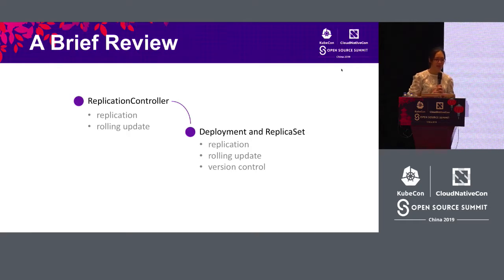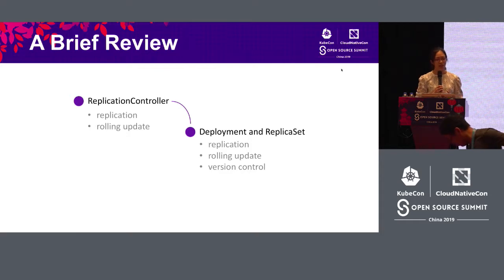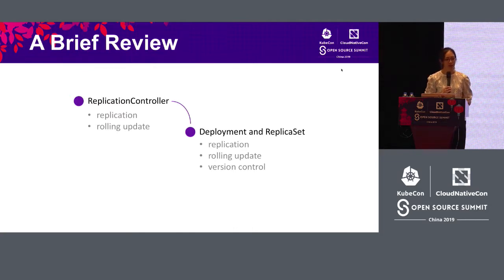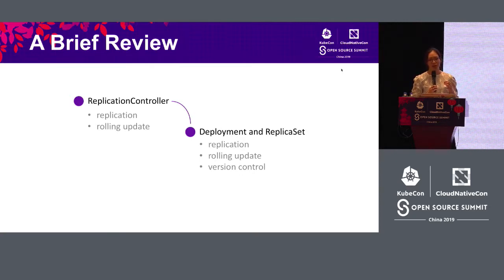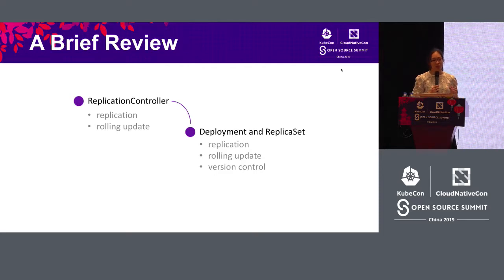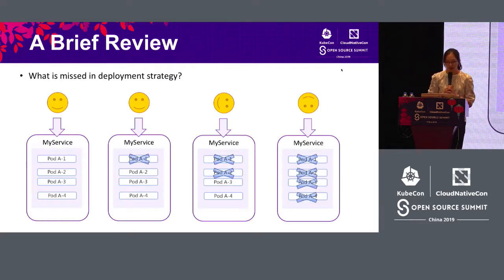I will be very quick in the first part and save more time for the demo. The Kubernetes deployment is the replication controller and there are two important tasks: replication and rolling update. Since then, Kubernetes has been solving the problem of availability and consistency. When we move to deployment, the deployment and the replica set has a structure of two layers, giving us the capability of version control so we can do rolling back to a historical version after release.